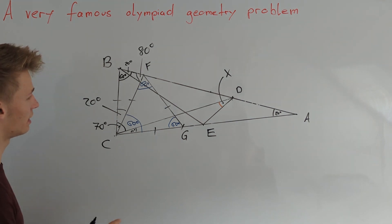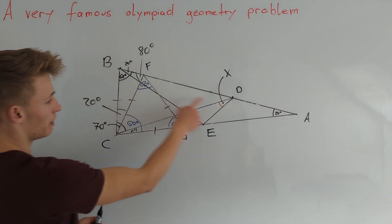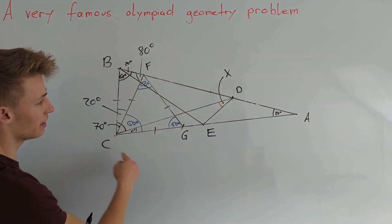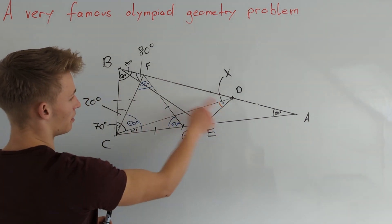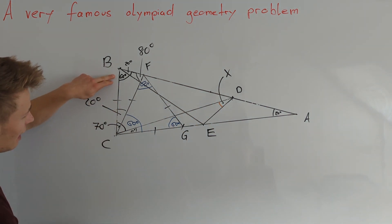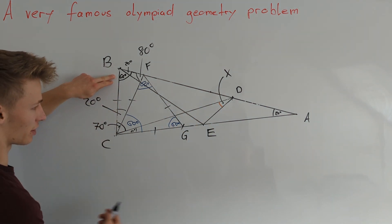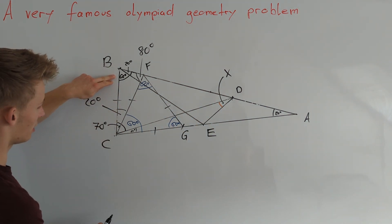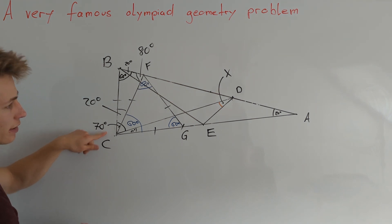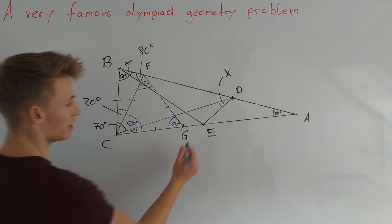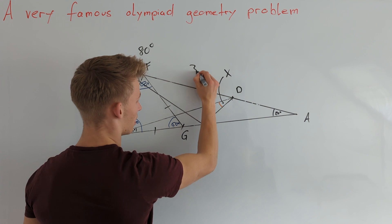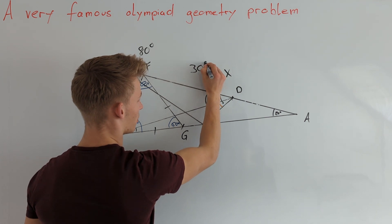Now we can also calculate the angle BDC. Namely, angle BDC is equal to 180 degrees minus 80 degrees, which is 100 degrees, minus 70 degrees, which gives 30 degrees. So this angle here is 30 degrees.